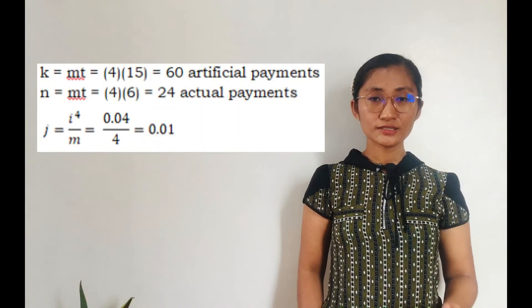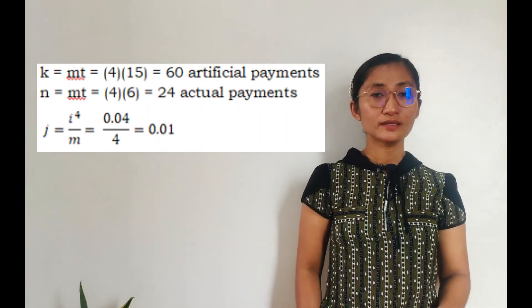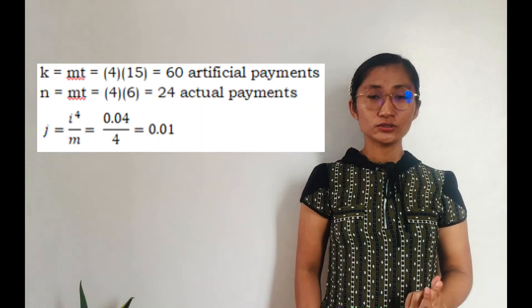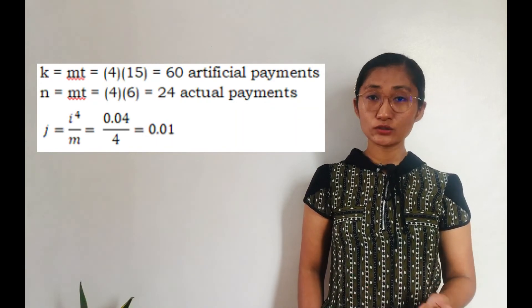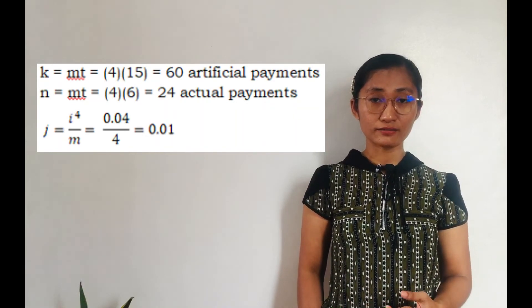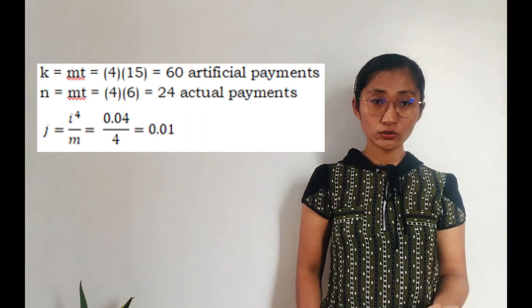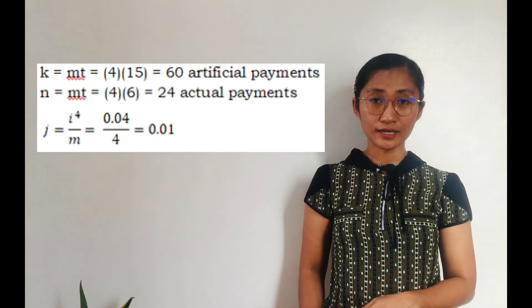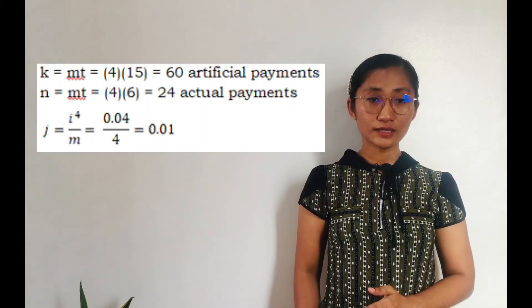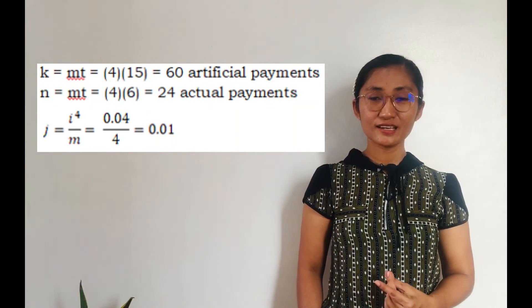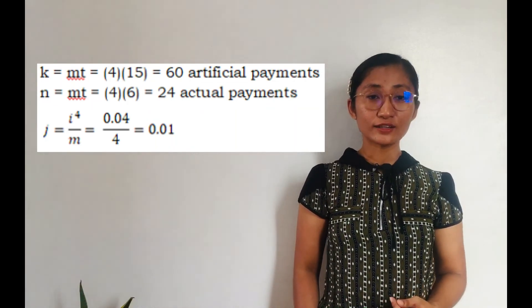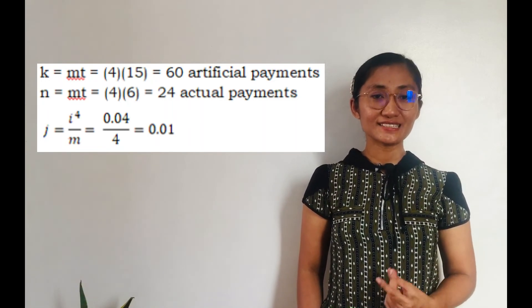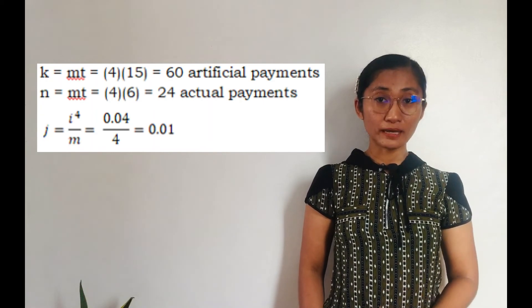K is equal to M times T. By substitution, we have 4 times 15. Where did we get 15? That is 60 minus 45, 60 less 45. Because right now, he's 45 years old and he'll receive his pension at his 60th birthday. So 60 less 45 is 15. That is where we have derived the value of T in K equals MT. Then, 4 times 15 is 60. So there would be 60 artificial payments.